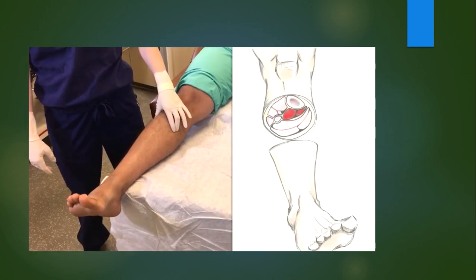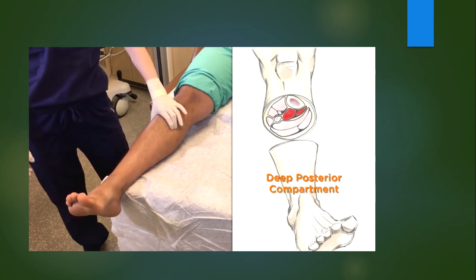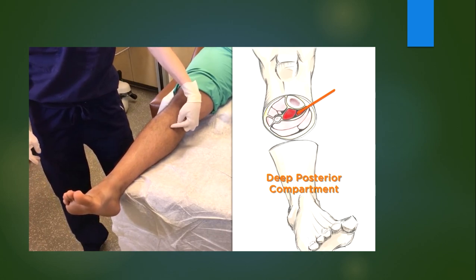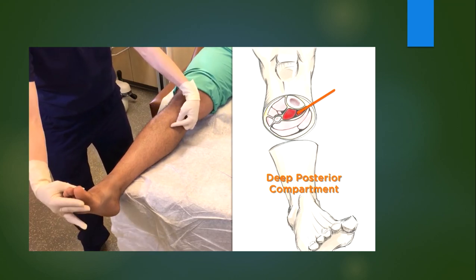Aim for the deep posterior compartment by grabbing the medial border of the tibia on one side and the lateral border of the fibula on the other side. Insert the needle medially aiming towards the posterior fibula and go about two to four centimeters in. The pressure should rise with extension of the toes.